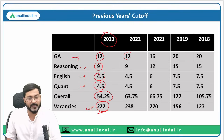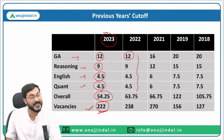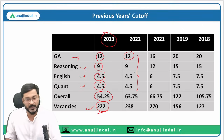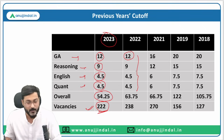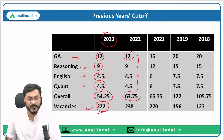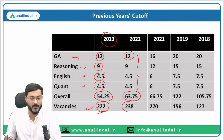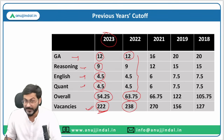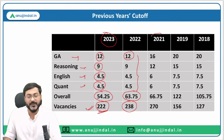If I talk about 2022, the same sectional cutoff applied as in 2023, but the overall cutoff was 63.75 and the total number of vacancies were 238. And if I talk about the year 2021...